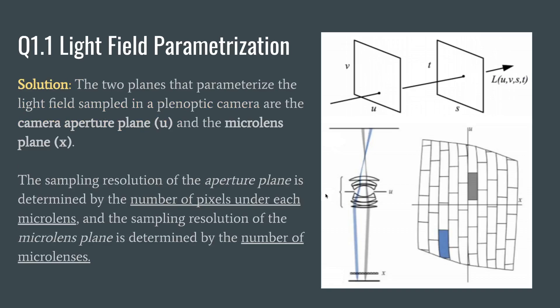So the two planes that parameterize the light field sampled in a plenoptic camera are the camera aperture plane right here, as we saw in the previous video, and the microlens plane X, which is really close to the sensor plane.